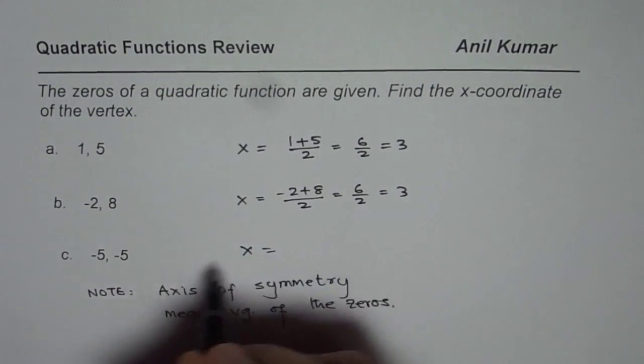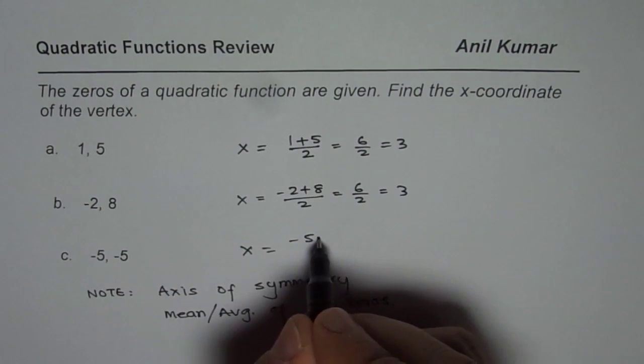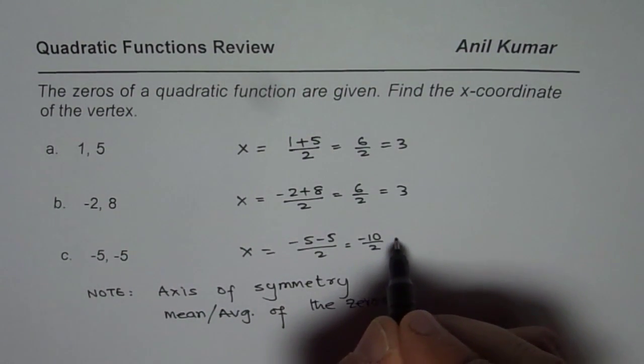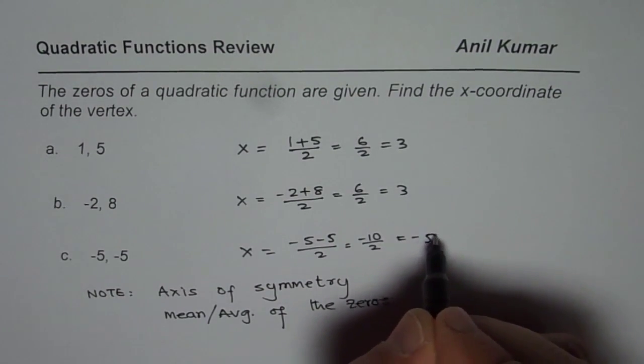And in this case, it will be -5 minus 5 divided by 2, which is -10 divided by 2, which equals -5.